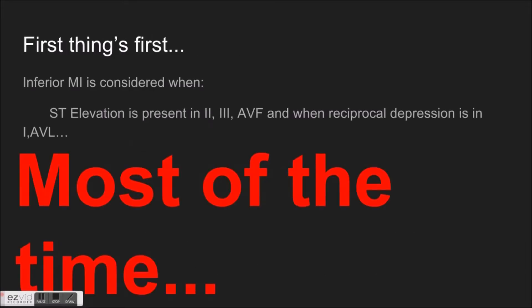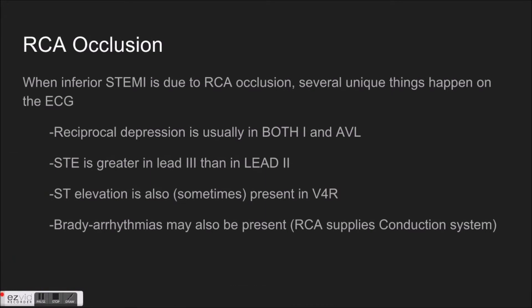When we're looking for an inferior wall MI, we're looking for ST elevation to be present in leads two, three, and AVF with reciprocal depression in lead one and AVL most of the time. When there's an inferior STEMI due to right coronary artery occlusion, a couple of unique things happen. You get reciprocal depression in both lead one and AVL. The ST elevation is often greater in lead three than in lead two. ST elevation is also sometimes present in V4R, as the right coronary artery does perfuse part of the right ventricle. We also see bradyarrhythmias, because the right coronary artery perfuses the entirety of the conduction system. So it's very common to see sinus bradycardia or heart blocks — first, second type one, second type two, and third degree.